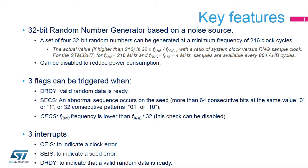The rule of thumb is: the lower the RNG clock, the better the entropy for the sampled random source. The Data Ready flag is set in the status register when a set of new random data is ready and validated.